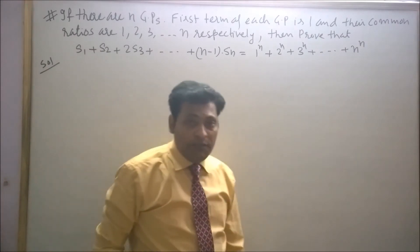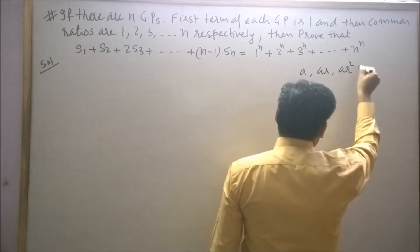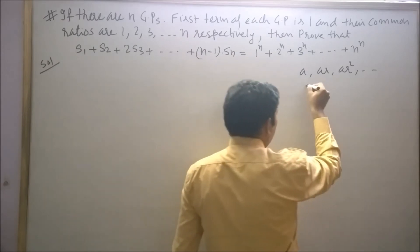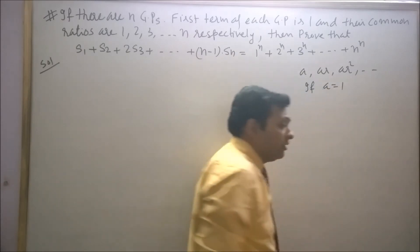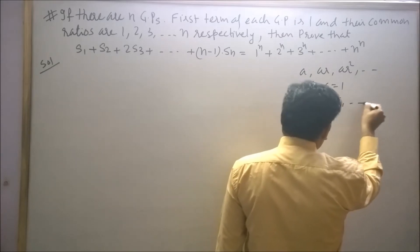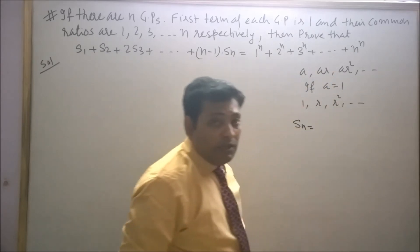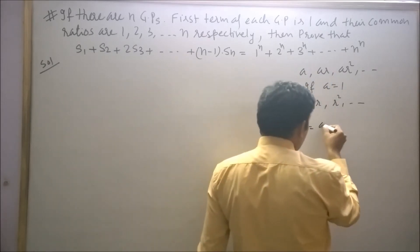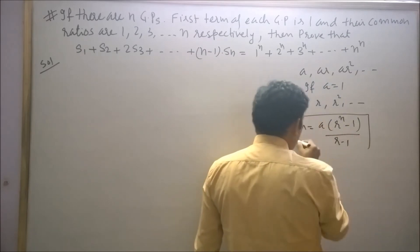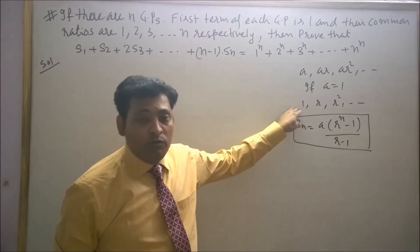Students, we generally represent a GP as A, AR, AR squared and so on, where A is the first term. If A is equal to 1, then this sequence can be written as 1, R, R squared and so on. The sum of the first N terms of this GP is A times (R to the power N minus 1) upon (R minus 1). Using this sequence we can generate GP1, GP2, and so on.